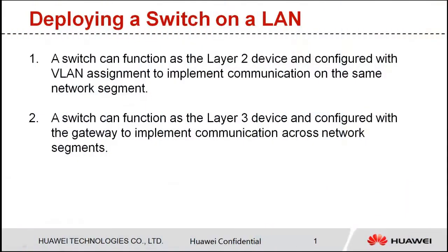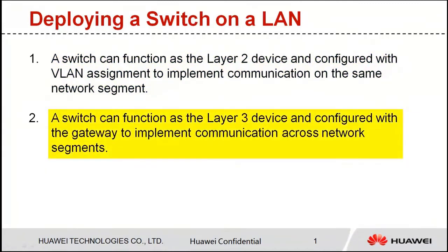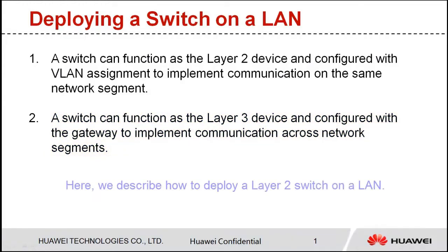Hi everyone. I'd like to show you how to deploy a Layer 2 switch on a LAN. A switch can function as a Layer 2 device and configured with VLAN assignment to implement communication on the same network segment. A switch can also function as a Layer 3 device and configured with the gateway to implement communication across network segments. Here we describe how to deploy a Layer 2 switch on a LAN.